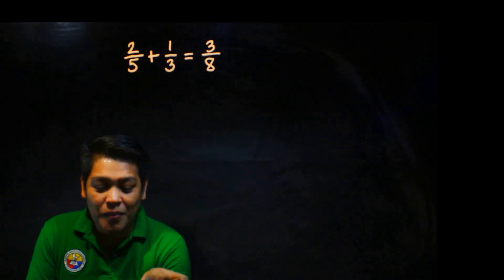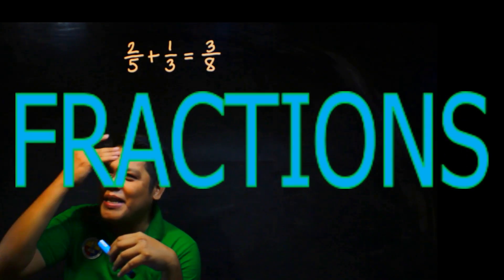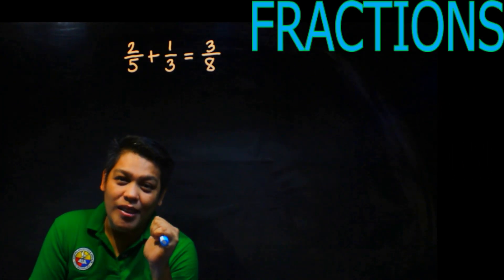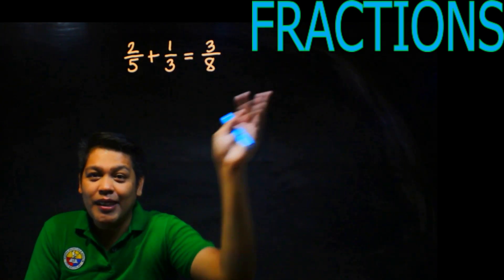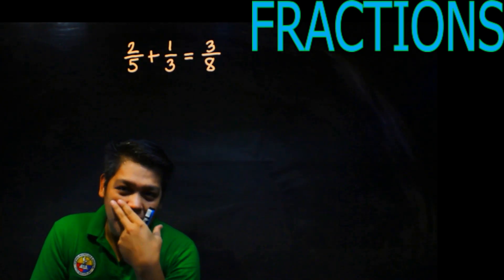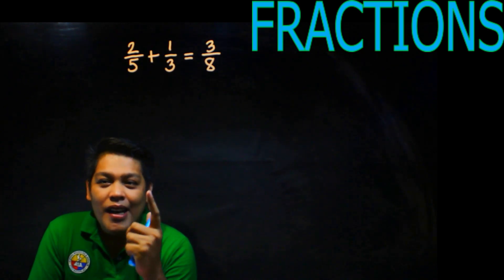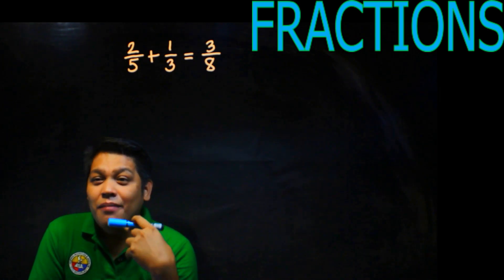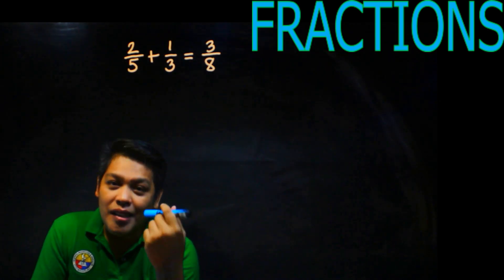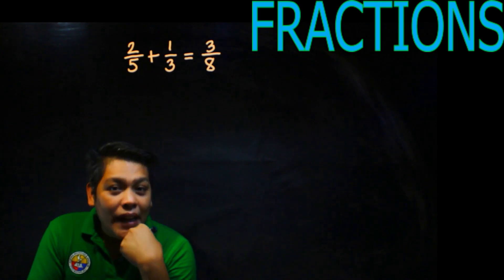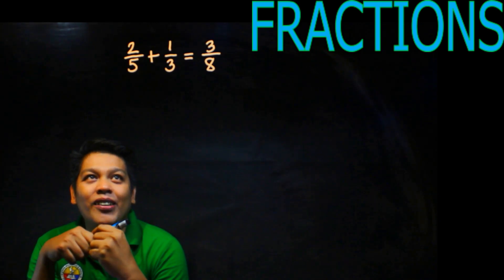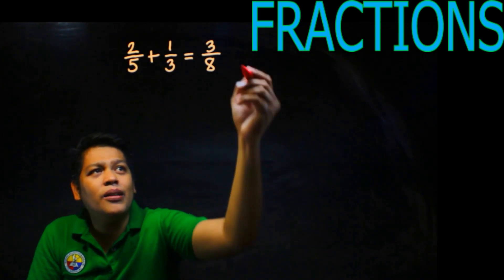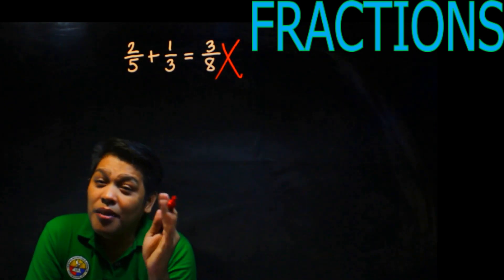Number 2: dealing with fractions. Many students have difficulty with fractions. If you want to review my video about operations on fractions, just click the card that will appear. Here's a common mistake my students make: 2 over 5 plus 1 over 3 equals 3 over 8. That is wrong — they simply added the numerator to the numerator, and denominator to denominator.